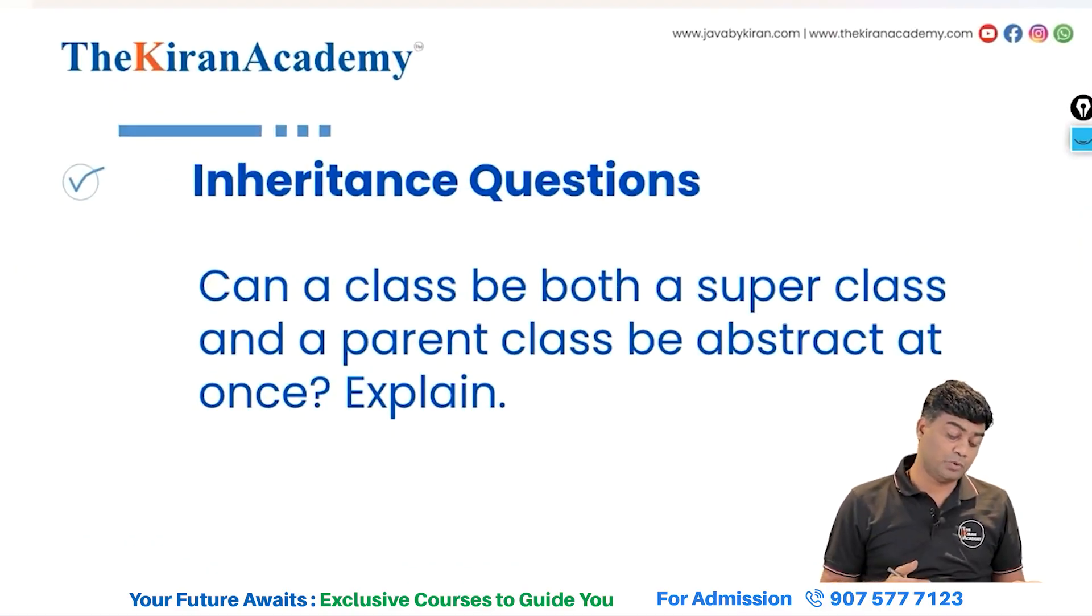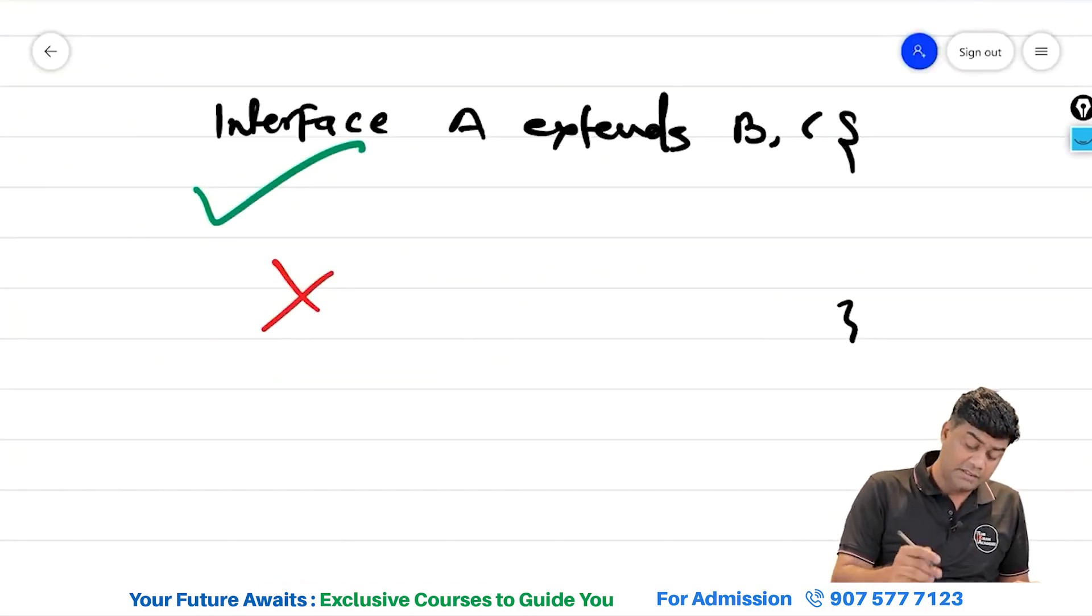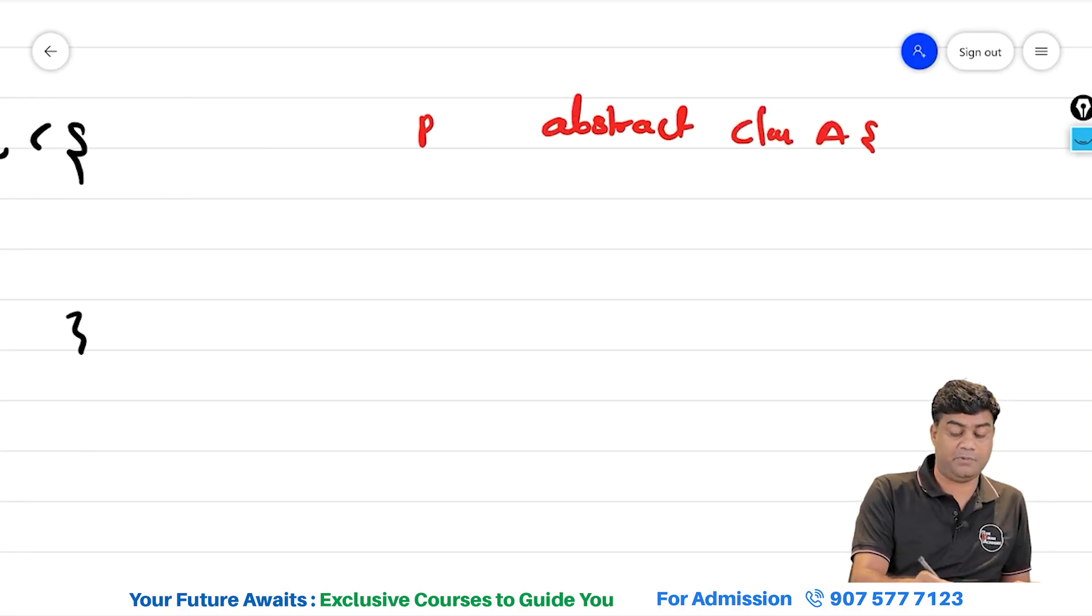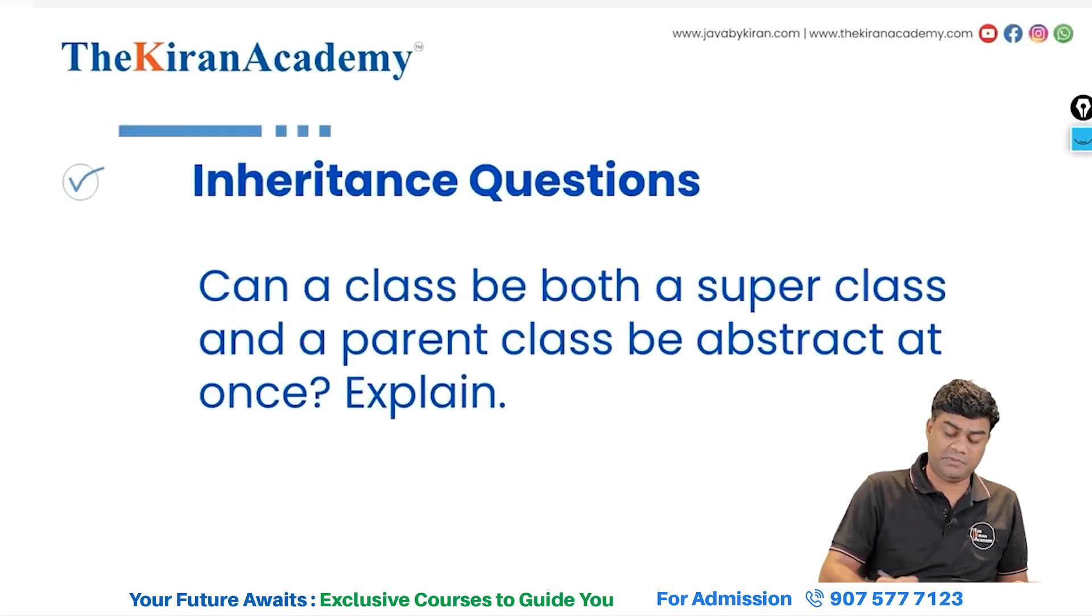Can a class be both super class and a parent class be abstract? Means it is asking, is super class can be abstract? Answer is yes. Abstract class A, B extends A. Yes, it is possible. It is very simple question.